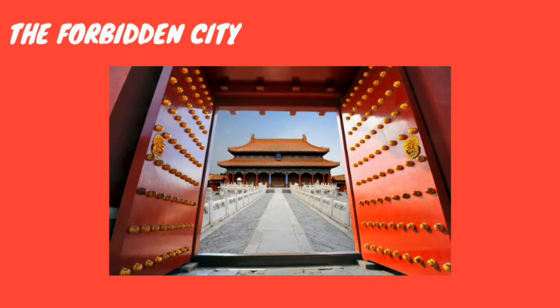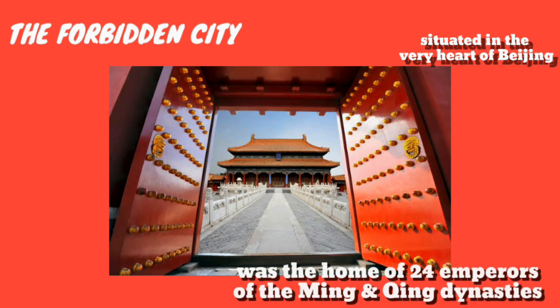The Forbidden City was the Chinese Imperial Palace situated in the very heart of Beijing. It was home to 24 emperors of the Ming and Qing dynasties. It is located in the center of Beijing, China, and now houses the Palace Museum. For almost 500 years, it served as the home of emperors and their households, as well as the ceremonial and political center of China's government.